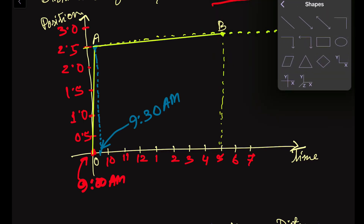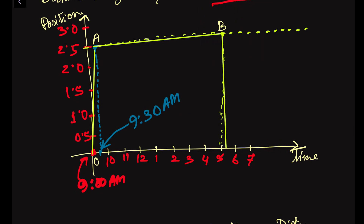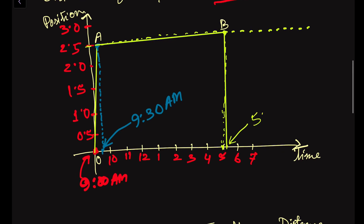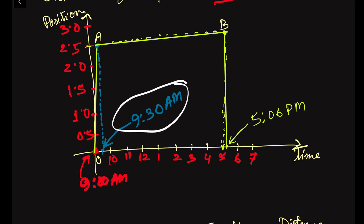After 6 minutes from 5 PM, she reaches home at 5:06 PM. This is the position-time graph. You need not show the dotted lines — you can directly draw the graph. The scales are given and the graph is complete. Thank you for watching. If you have any questions, please put them in the comment section below. Also like, share, and subscribe to my channel.